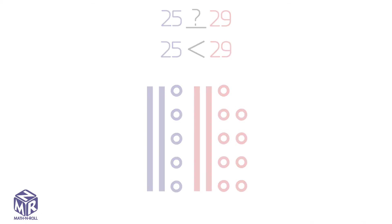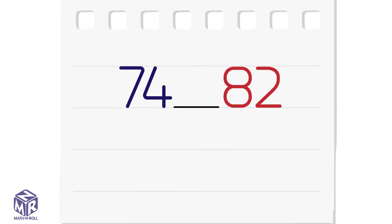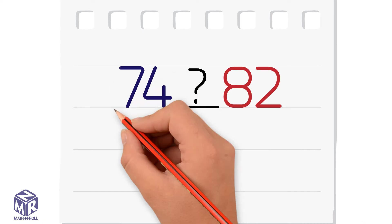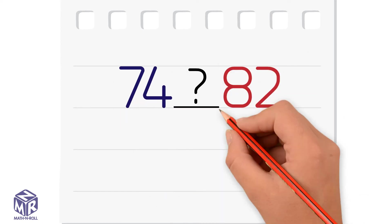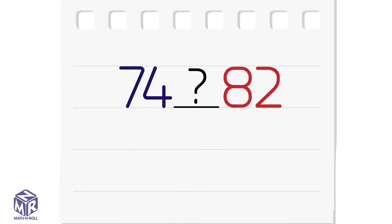Let's try another example without a model. Which is less, 74 or 82? Let's compare the tens. Seven tens is less than eight tens, so 74 is less than 82.